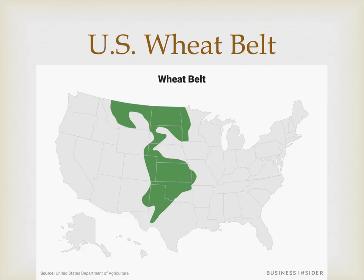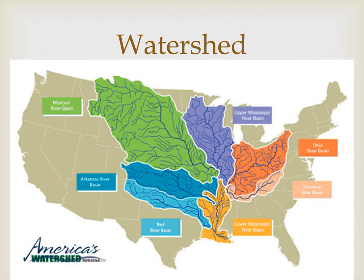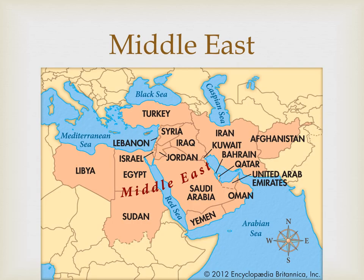The US wheat belt is the area where most wheat is grown in the United States — what type of region would that be? Next, let's start with what a watershed is: a watershed is a region in which all rainfall eventually flows downhill through a system of streams and tributaries into the same body of water. What type of region would that be? How about the Middle East — what kind of region would this be: formal, functional, or perceptual?